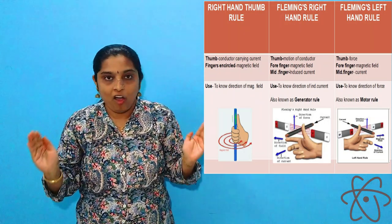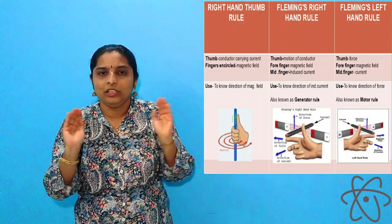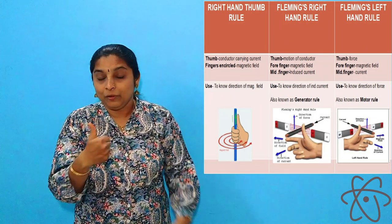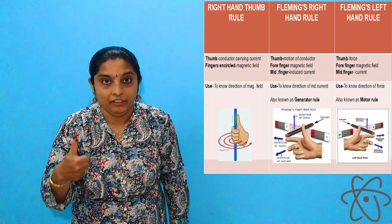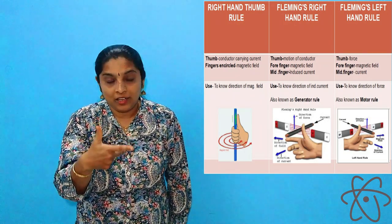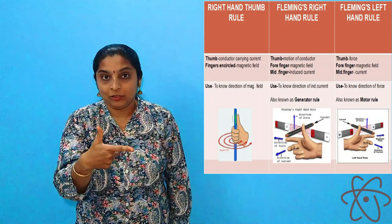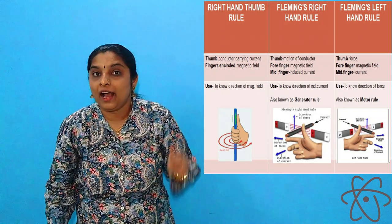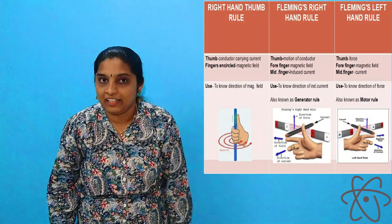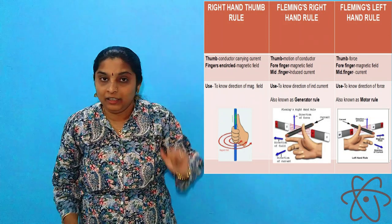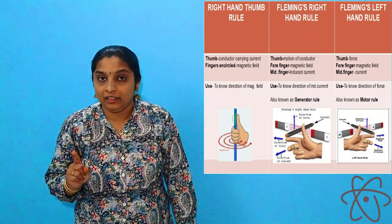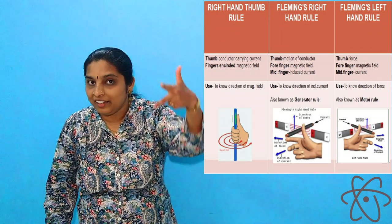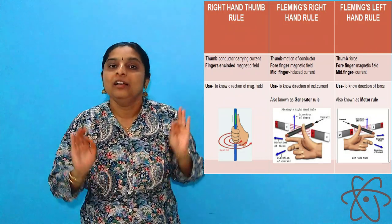Here is a small trick to distinguish between all three. Right hand grip rule: they normally ask for the direction of the magnetic field — only a current-carrying conductor and magnetic field are involved. If they ask about induced current, use Fleming's right hand rule — the middle finger represents induced current. If they ask for the force acting on the conductor, use Fleming's left hand rule. Magnetic field lines with current-carrying conductor only? Grip rule. Induced current? Right hand rule. Force on conductor? Left hand rule. This is an easy way to distinguish between all three.